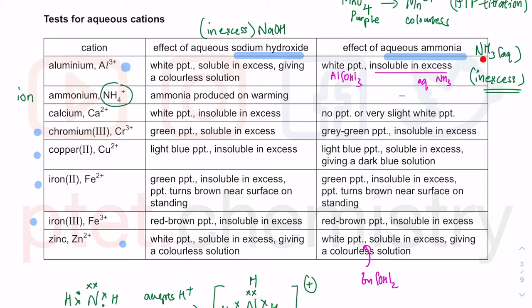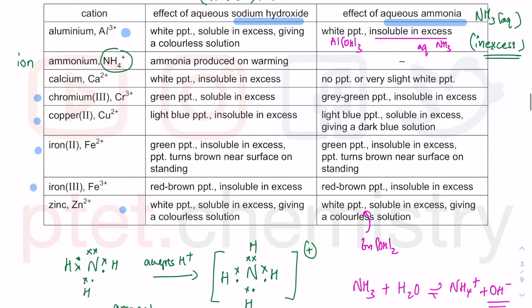With zinc 2+, the precipitate will be soluble in excess ammonia, giving a colorless solution — just like all zinc 2+ compounds. Even though zinc belongs in the first-row transition metals, zinc is not considered a transition metal because it does not display the normal characteristics of a transition metal, which are to form colored compounds, colored solids, and colored solutions. Its solutions are all colorless. That's how you differentiate between zinc 2+ and Al³⁺.